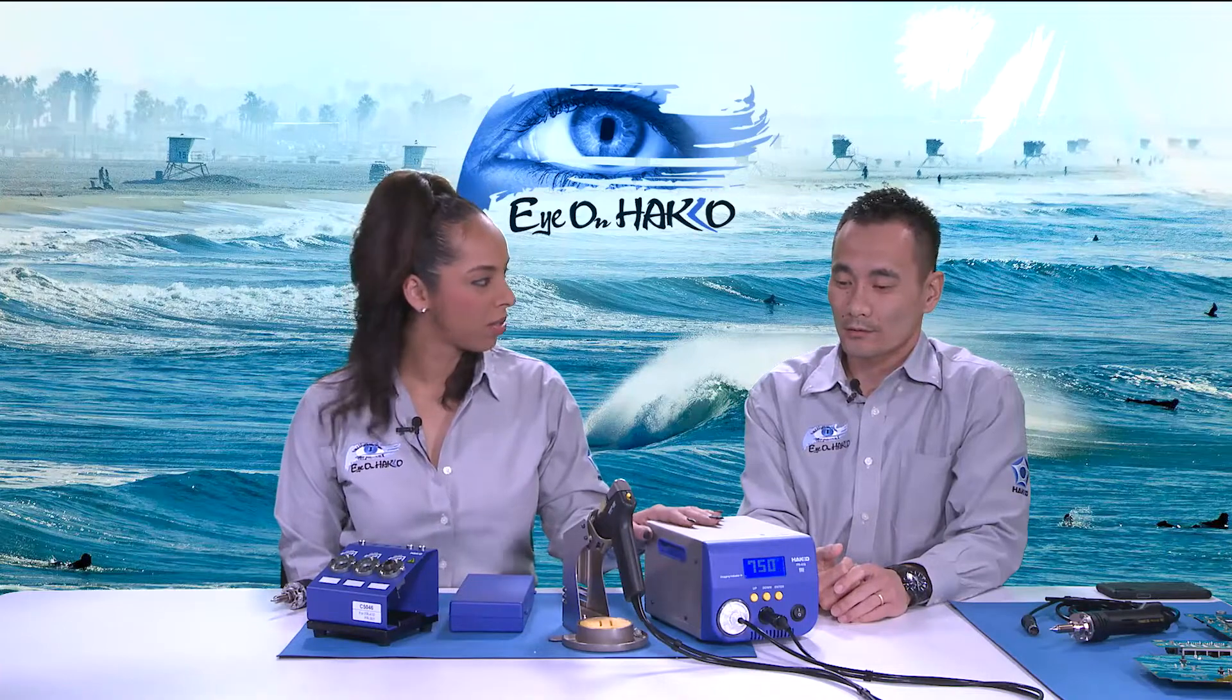So we went over some main features. Actually, I forgot the temperature range. That would be nice to know. The temperature range of the desoldering tool for the FR-410 is 330C to 450C. And for the FR-400, it's 350C to 500C.